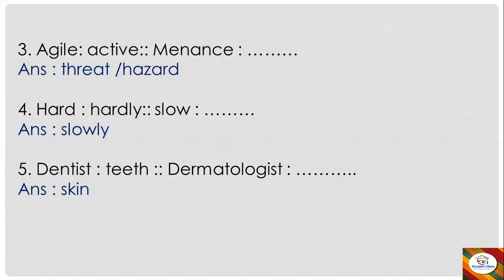Next question: 'agile' is to 'active' as 'maintenance' is to dash. 'Agile' means 'active' — it's a synonym. The other word for 'agile' is 'active'. So similarly, the other meaning word for 'maintenance' is 'threat' or 'hazard'. Both of them are correct — any one of them you can write. 'Agile' is to 'active' as 'maintenance' is to 'threat' or 'hazard'.